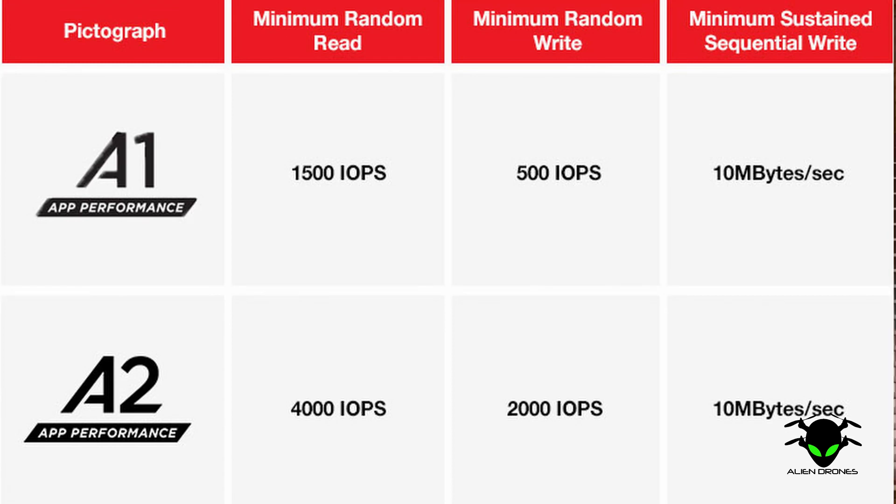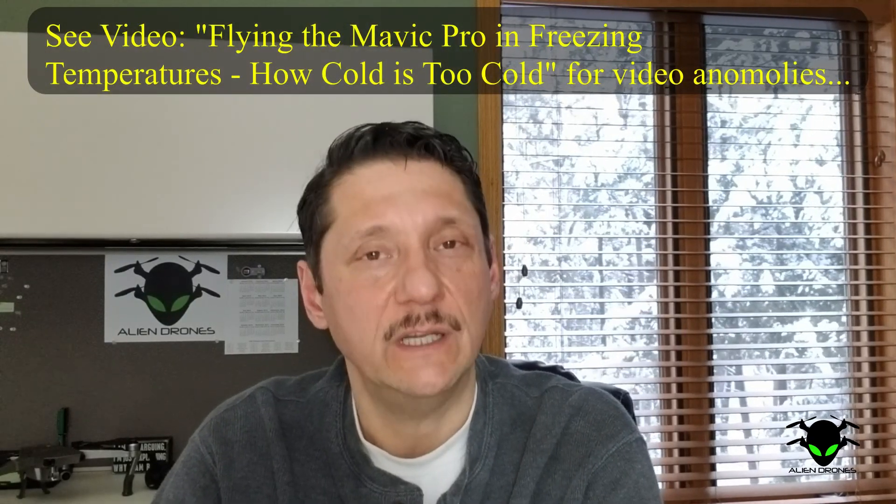Just to be thorough, here are the IOPS ratings: A1 is 1,500 IOPS and A2 is 4,000 IOPS — that's a minimum random read. The read isn't quite as important as write speed for us, since we're trying to write footage very fast; reading will matter more when pulling data back into your editing software. It's also important to note that I did have some problems with writing when the temperature was really cold — you could actually see artifacts in the images from that.